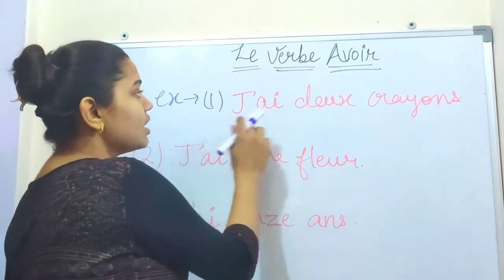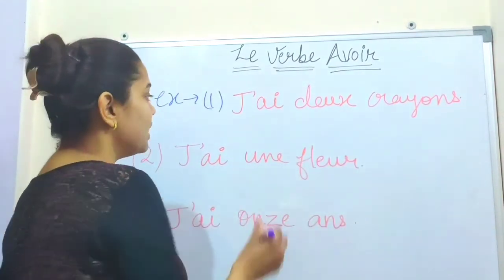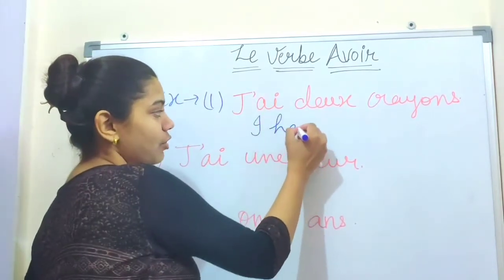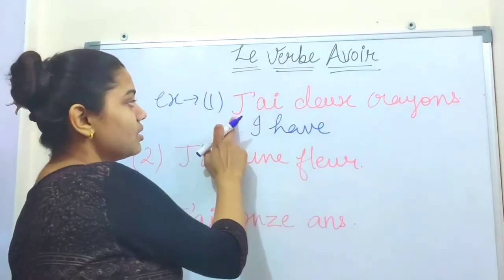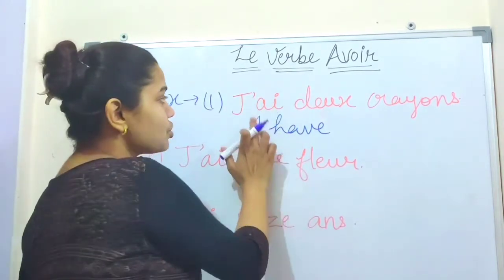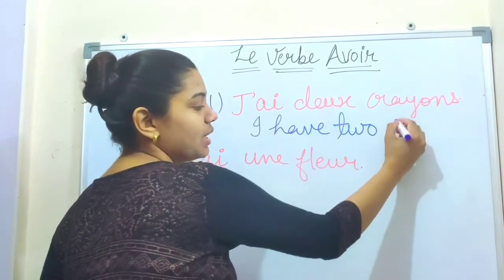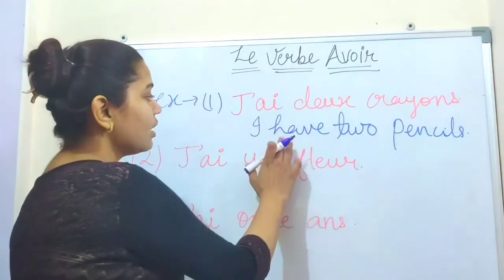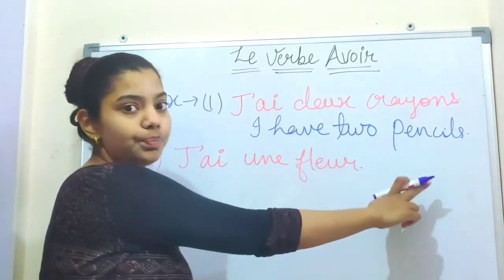The first example is: j'ai deux crayons. J'ai means 'I have,' deux means 'two,' and crayons means 'pencils.' So j'ai deux crayons means 'I have two pencils.' Here 'have' is expressed using j'ai — the conjugation of avoir with je.